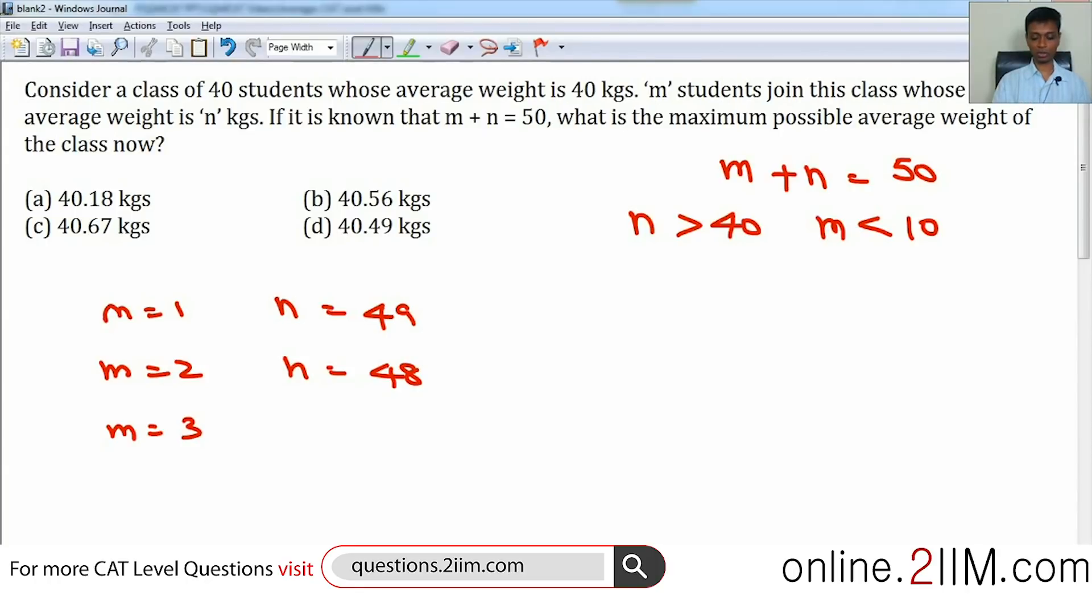Think about this: if n were 49 kilograms, then I'm bringing in 9 more kilograms than the existing average, but I'm bringing only one student. When n is 48, I'm bringing 8 more kilograms—less than 9—but I'm bringing in two students, so twice over 8. That would be the impact on the total. So it is not just dependent on that; it depends on this as well. I want to create this quantity, this term called impact on total: how much does the total change by?